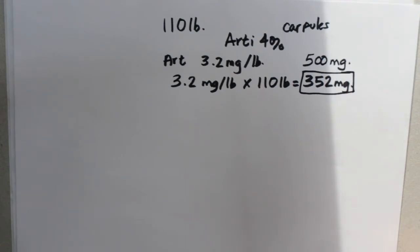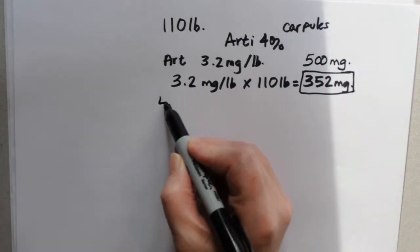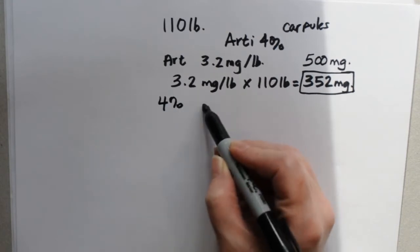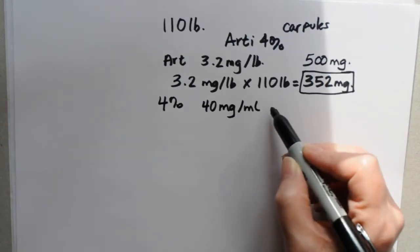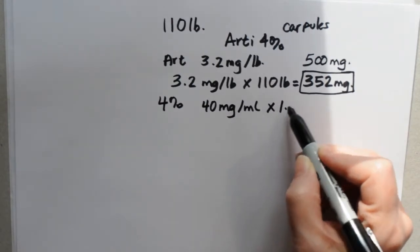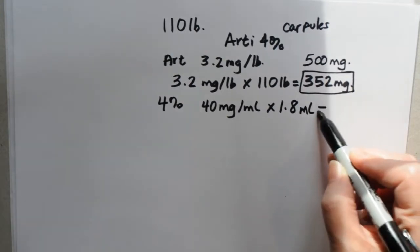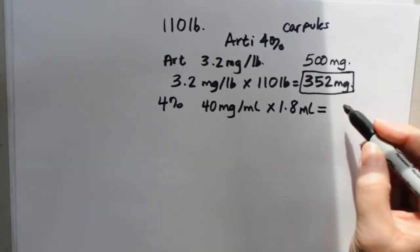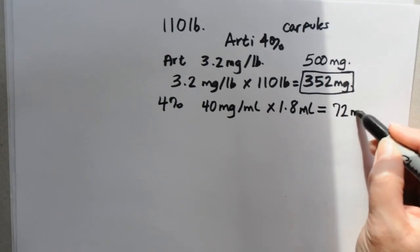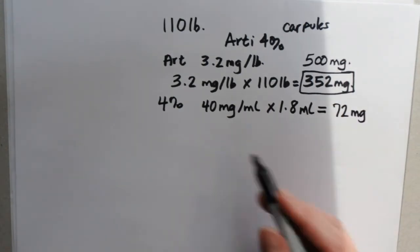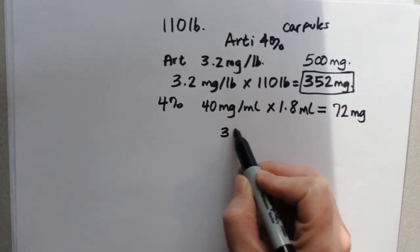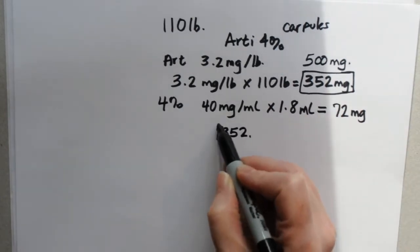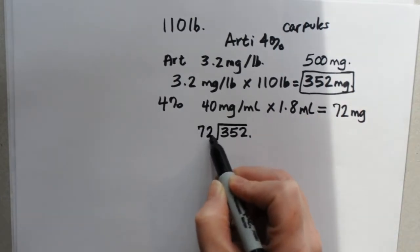So the next thing we need to do is figure out how many carps that is. So since articaine is a 4% solution, there are 40 milligrams per milliliter of drug times 1.8 milliliters in a carp, and we get 72 milligrams in a carp. So now, to figure out how many carps, we take the total number of milligrams that we can give them and divide it by how much is in a single carp.